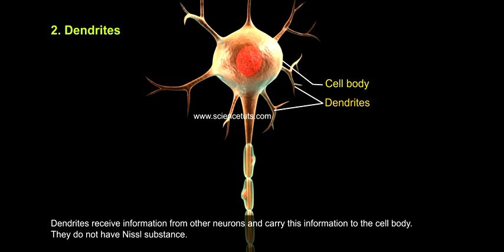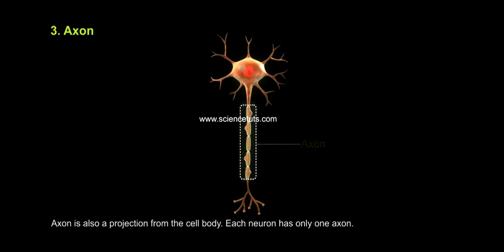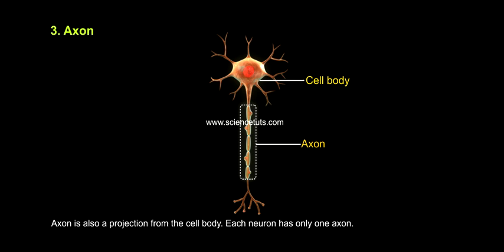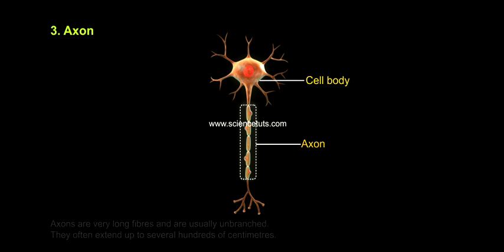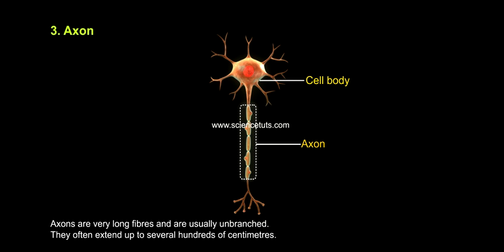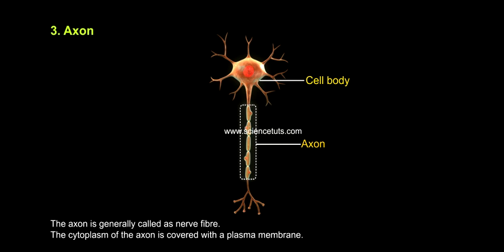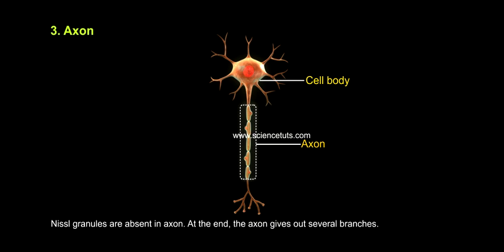The third part is the axon. The axon is also a projection from the cell body, but each neuron has only one axon. Axons are very large fibers and are usually unbranched. They often extend up to several hundreds of centimeters. The axon is generally called a nerve fiber. The cytoplasm of the axon is covered with a plasma membrane, and Nissl granules are absent in the axon.